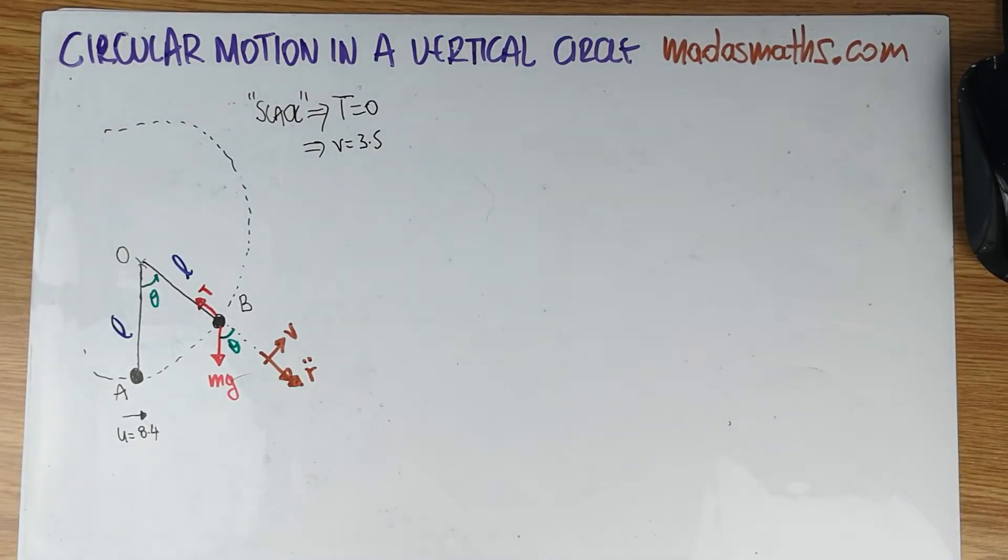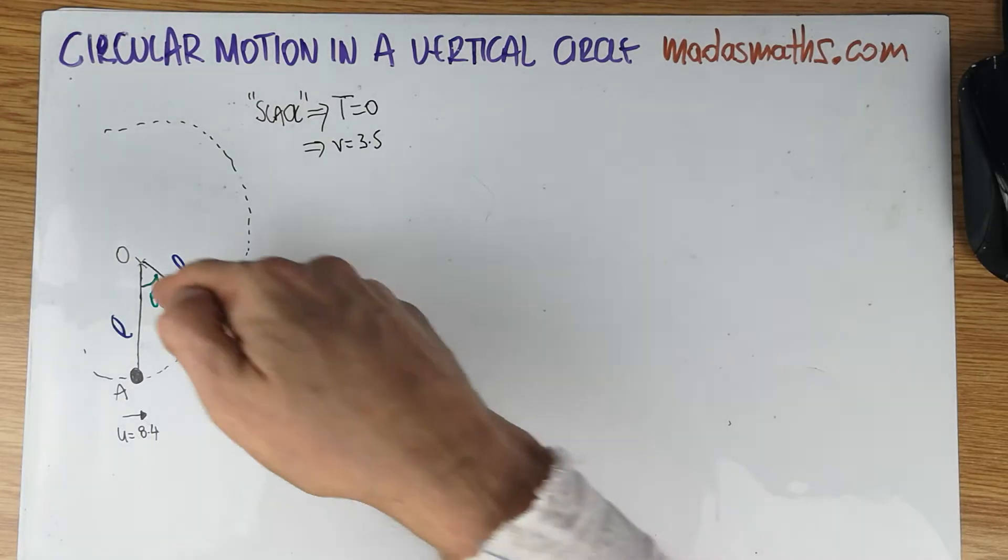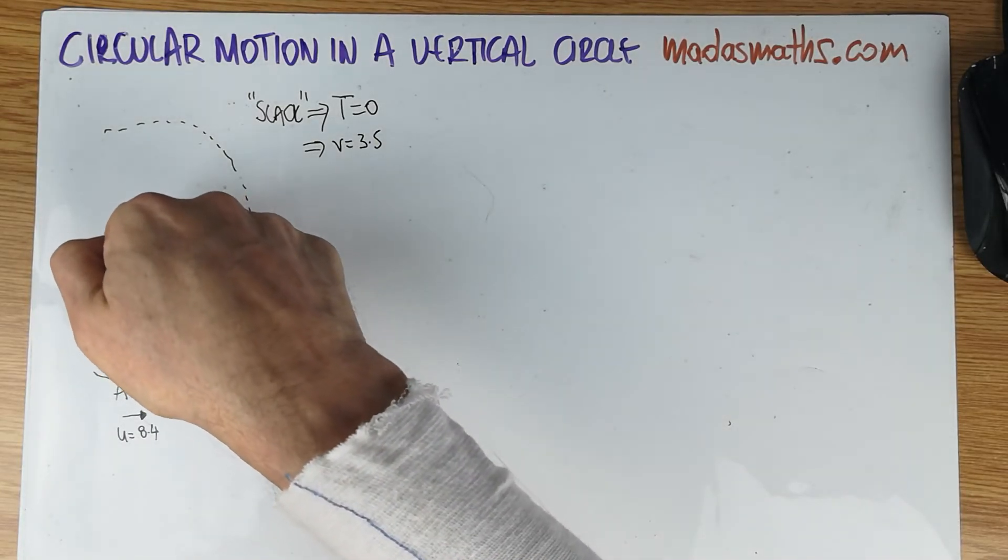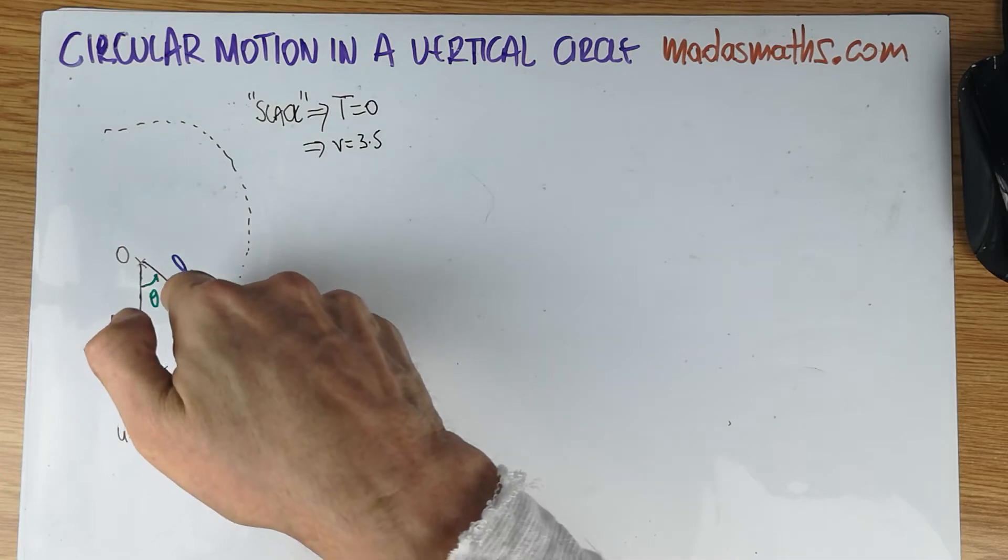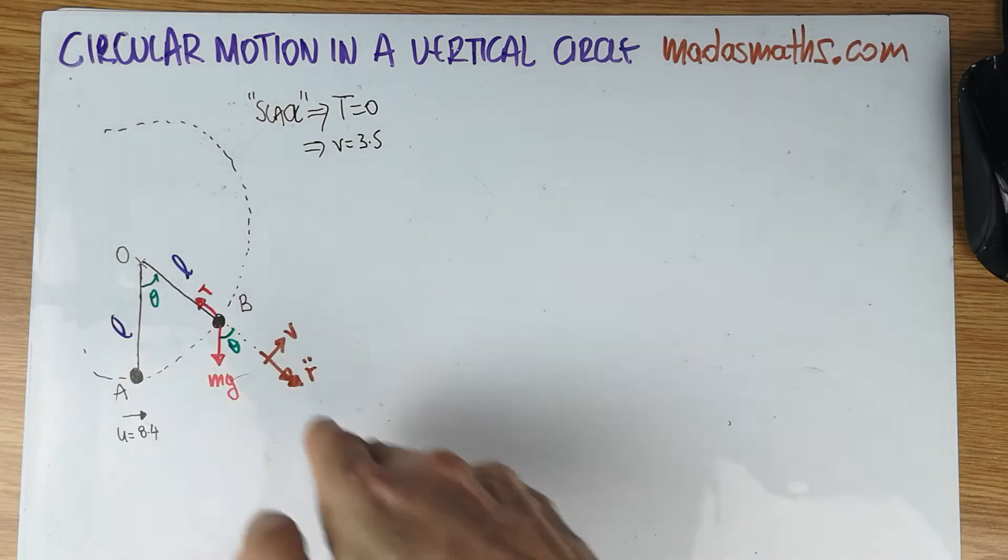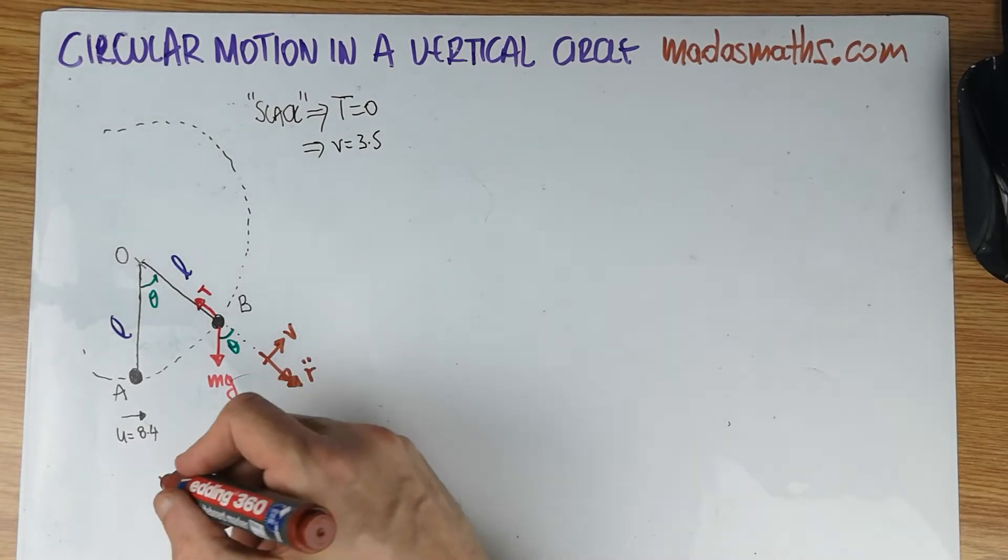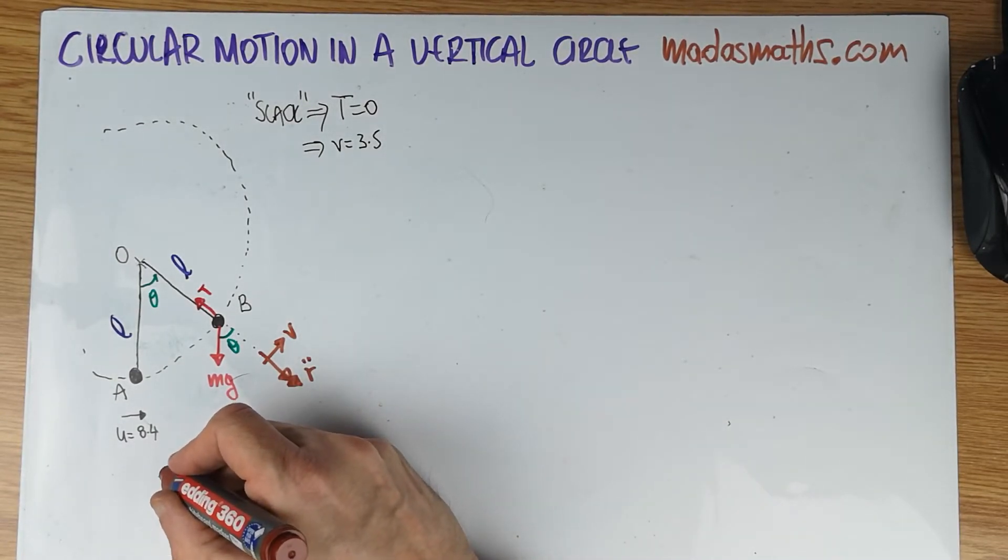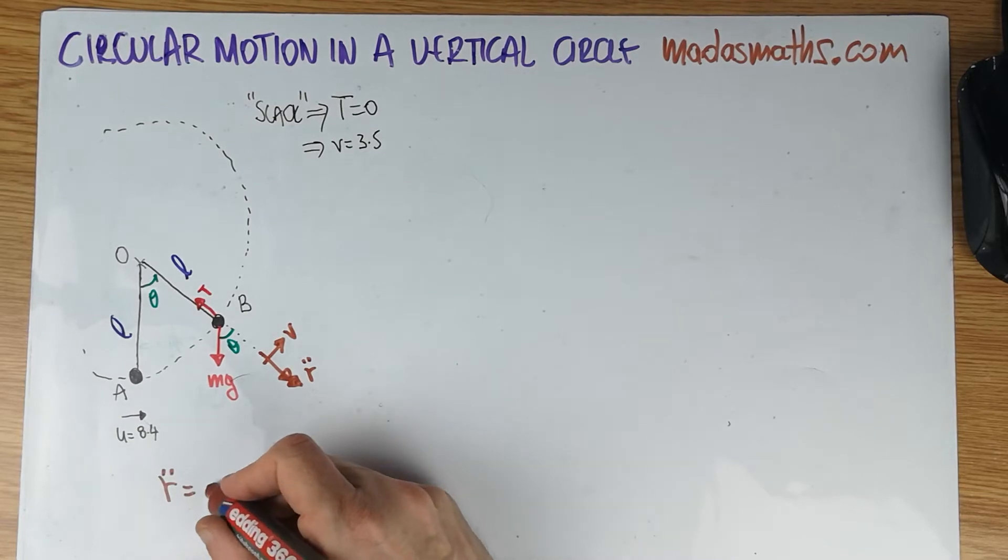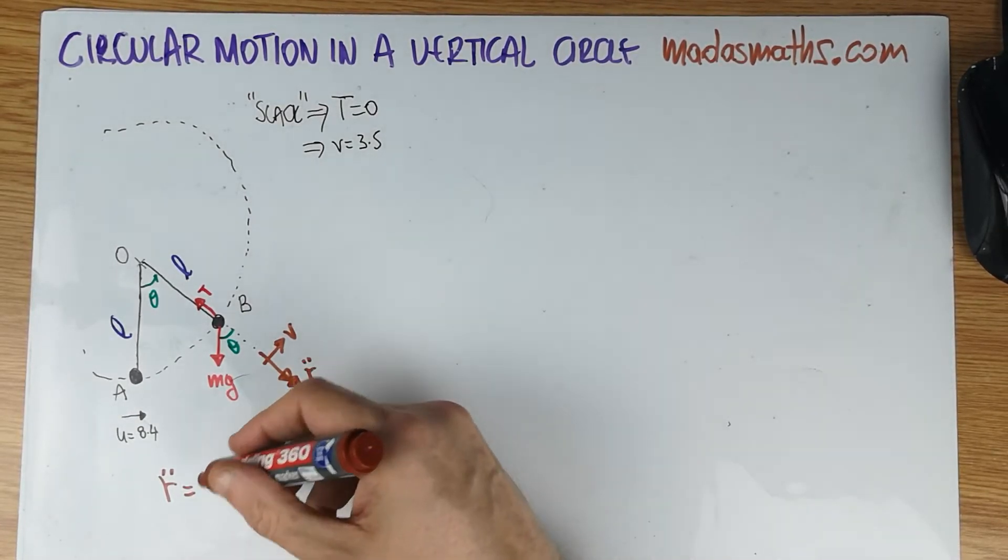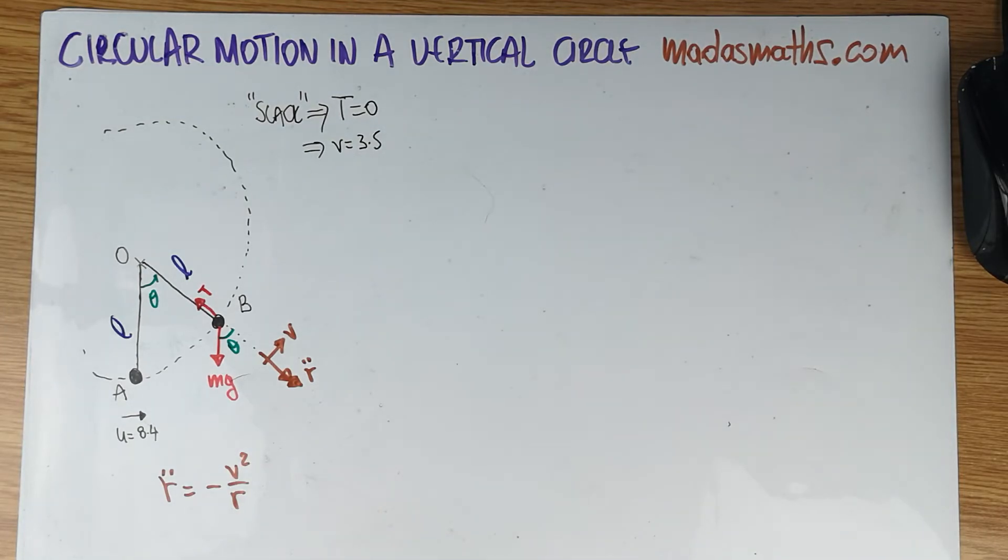And this is the acceleration direction, R double dot. And of course, the acceleration is outwards. R is increasing in this direction. Therefore, R double dot will be in this direction here. However, of course, for those who have seen my video in polar coordinates, R double dot is minus V squared over R. So when you're replacing that, you'll be replacing with the negative of this.